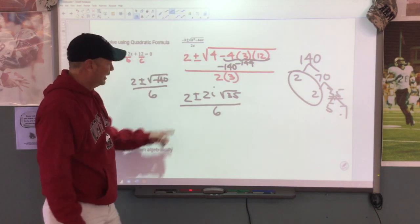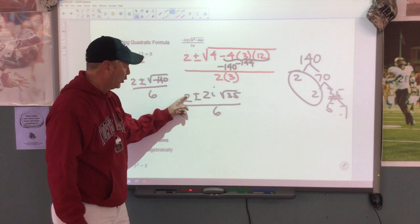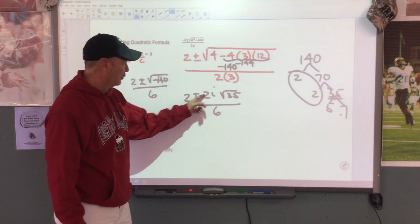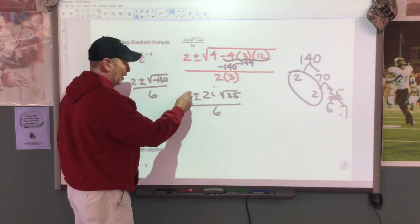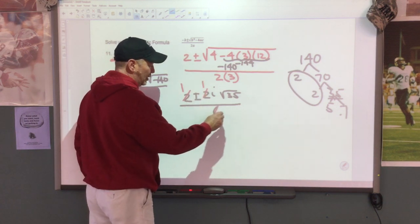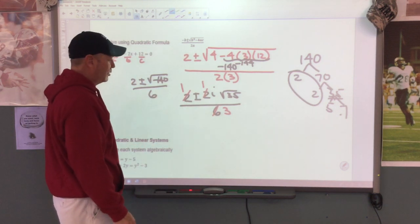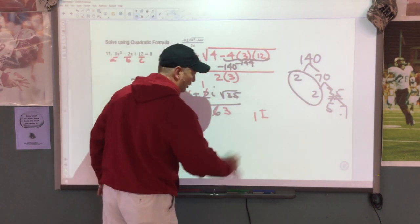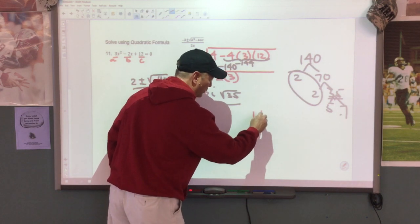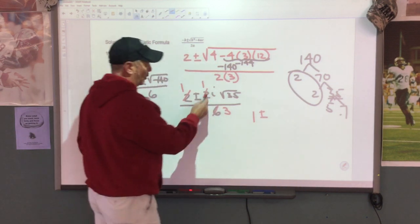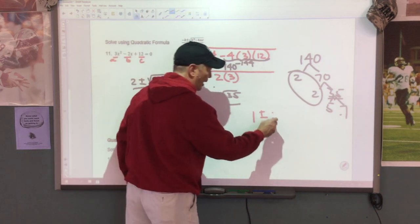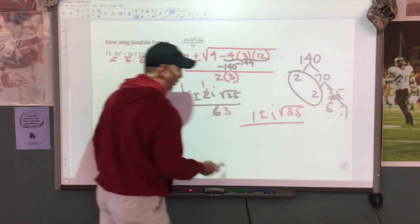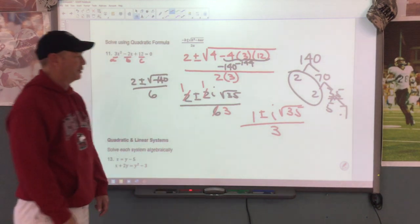The rule is, if you can find a number that goes into all three of these values — because they're outside the radical — then we can reduce. The number 2 goes into all three. So 2 goes in here 1 time, 2 goes in here 1 time, 2 goes in here 3 times. So when I get the final answer, I am looking at 1 plus or minus — the 1 cancels — i square root of 35 over 3. There's your final answer.